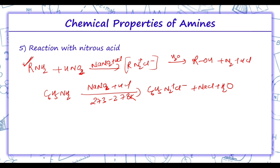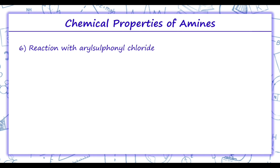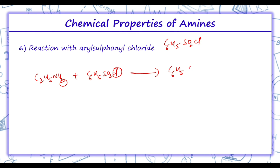The reaction of secondary and tertiary amines with nitrous acid occurs in a different manner, which will be discussed in the next video. Next is the reaction with aryl sulfonyl chloride, C6H5SO2Cl. When C2H5NH2 reacts with C6H5SO2Cl, HCl is removed and we get C6H5SO2-NHC2H5, which is N-ethylbenzenesulfonamide. Secondary amines also give this reaction, but tertiary amines do not react with aryl sulfonyl chloride because they have no hydrogen to be replaced.